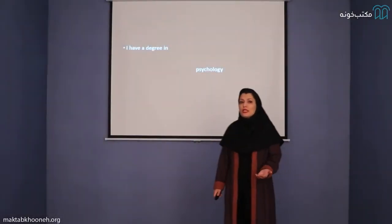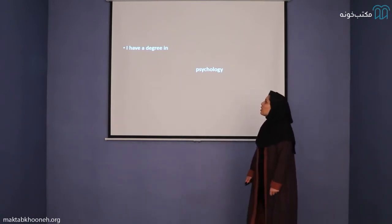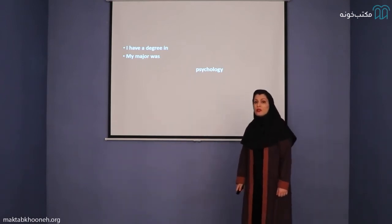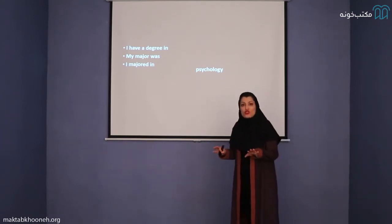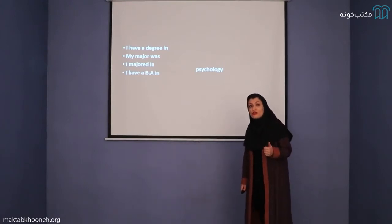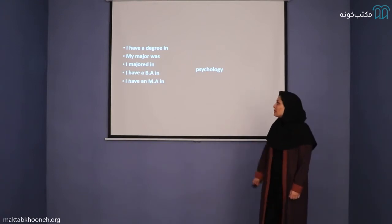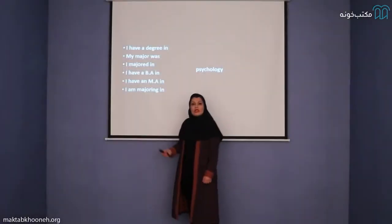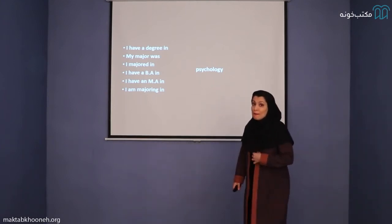What if we want to talk about our majors? Whenever we're talking about our majors, we can say: 'I have a degree in psychology,' for example. 'I have a degree in literature. I have a degree in engineering.' Also, you can say 'My major was psychology' if your education is finished. 'I majored in psychology' — it means your education is finished. 'I have a BA in psychology' or 'I have an MA in psychology.' And 'I am majoring in psychology' means you're still studying in university.